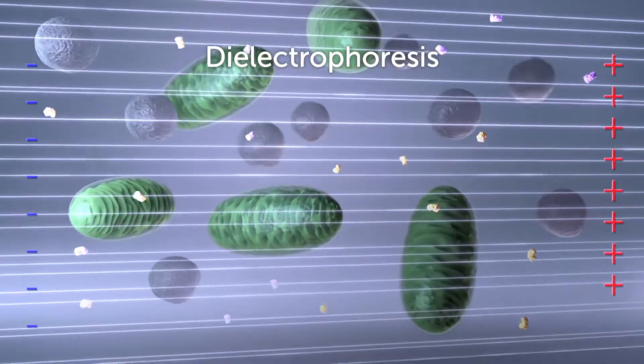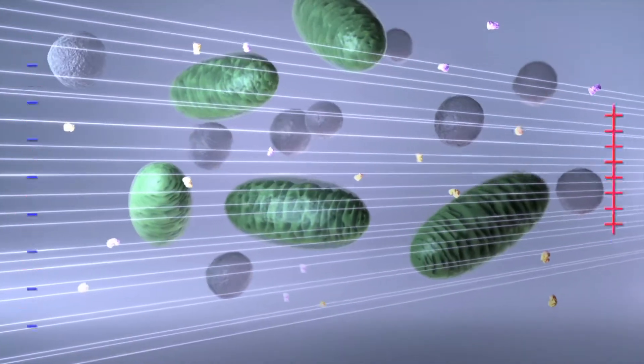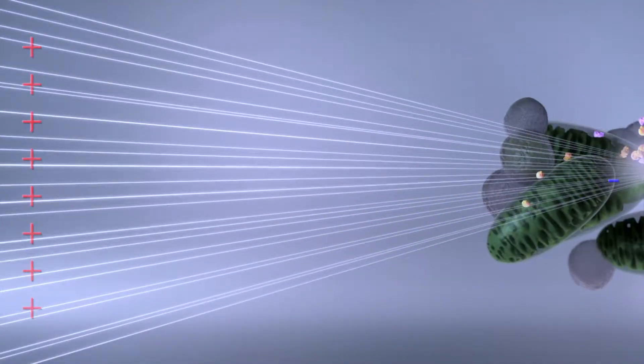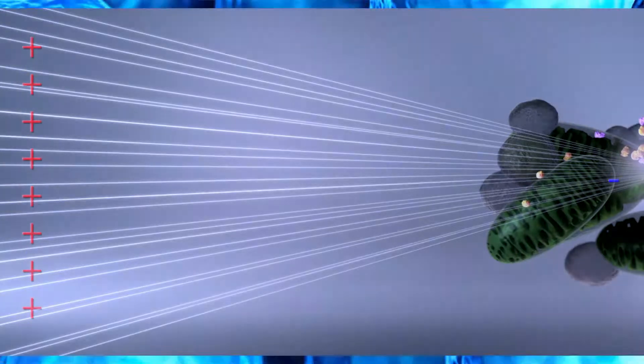Dielectrophoresis. When electric fields are non-uniform, polarizable objects migrate toward regions of high field density in a process known as dielectrophoresis.